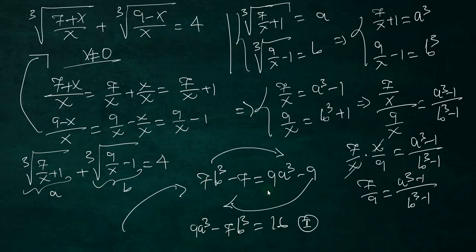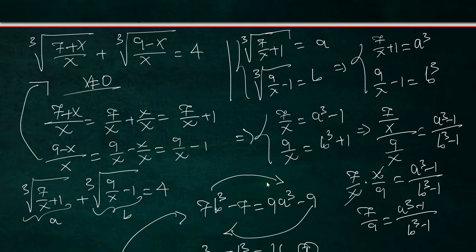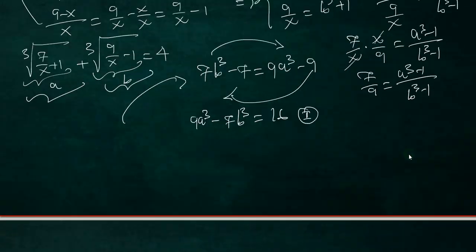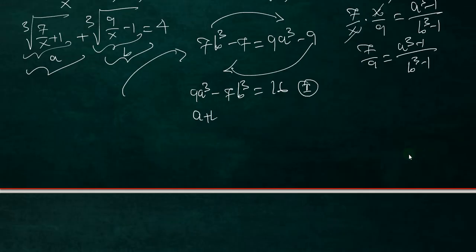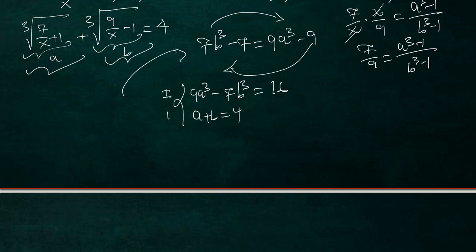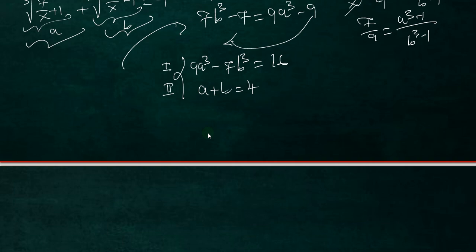Our first equation comes from the original substitution: since a and b are the two cube roots that sum to 4, we have a + b = 4. So we have the system: equation one, a + b = 4, and equation two, 9a³ - 7b³ = 16. There are different methods we could apply, but I'll follow the standard method — please share alternatives in the comments.